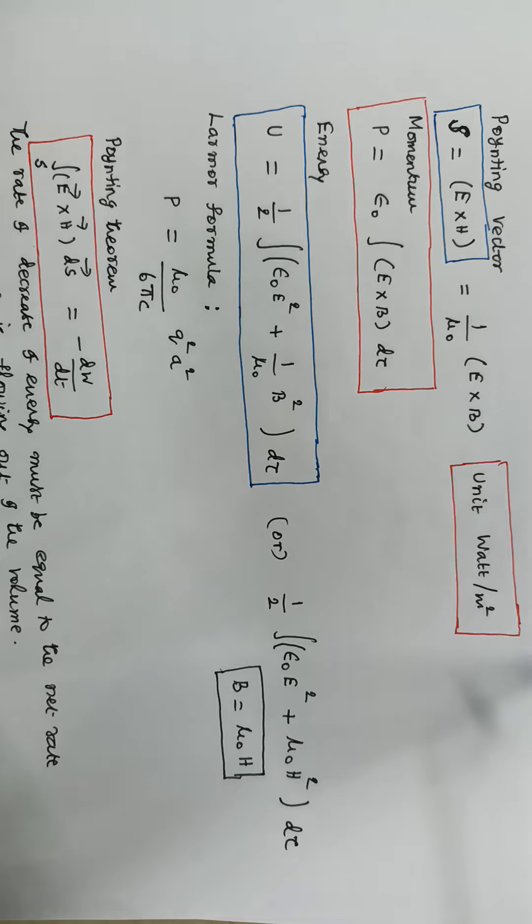The momentum in terms of the pointing vector is given by the equation P equals ε0 integral E cross B dτ.